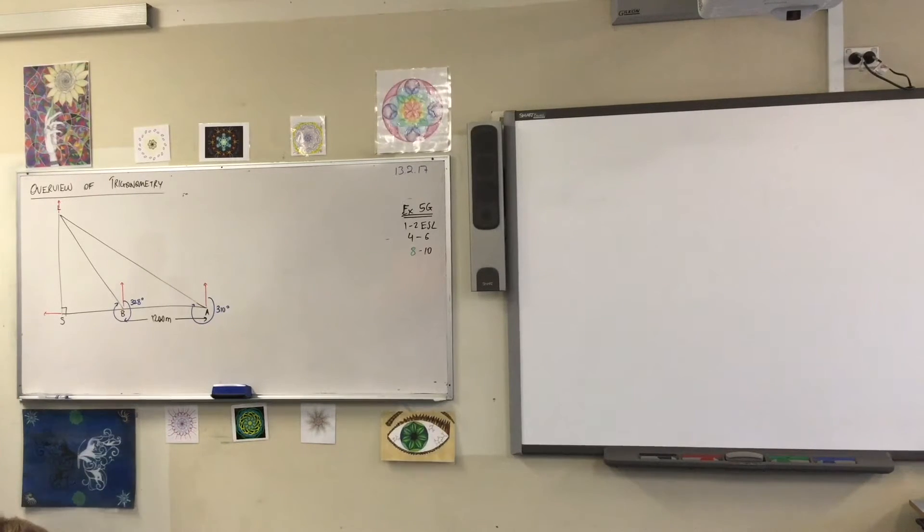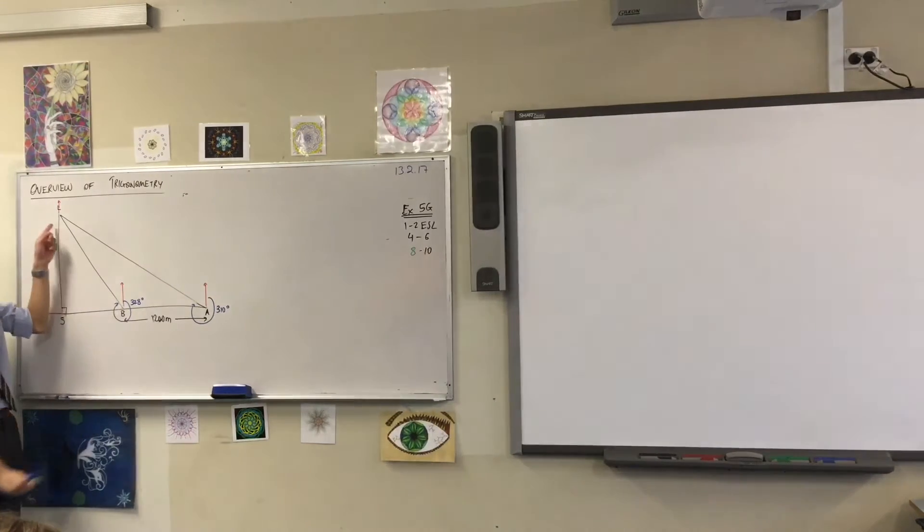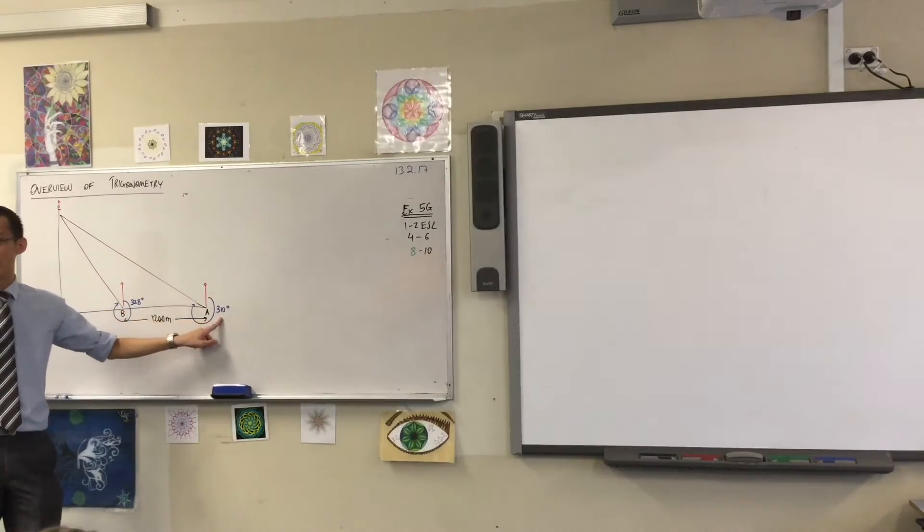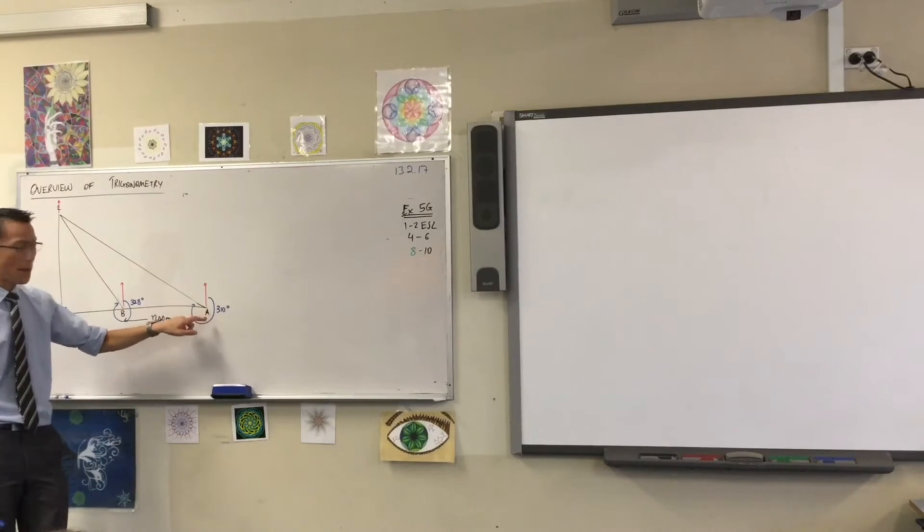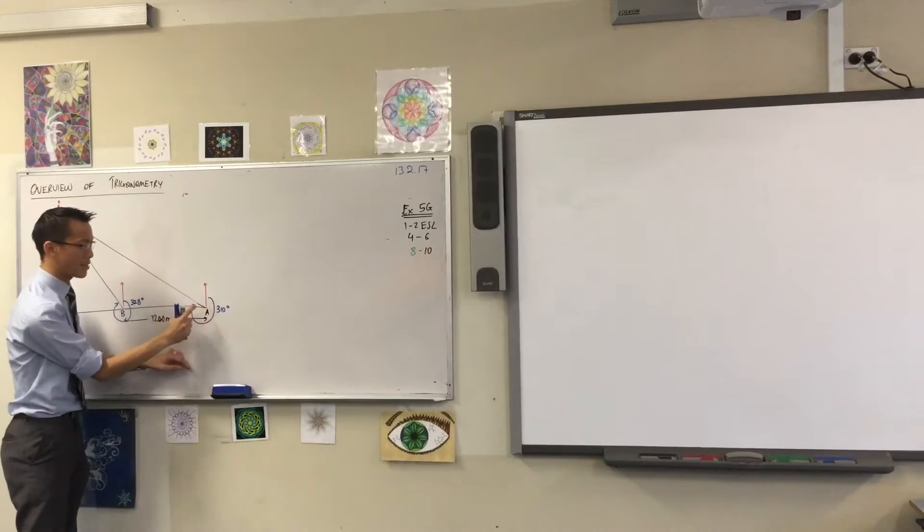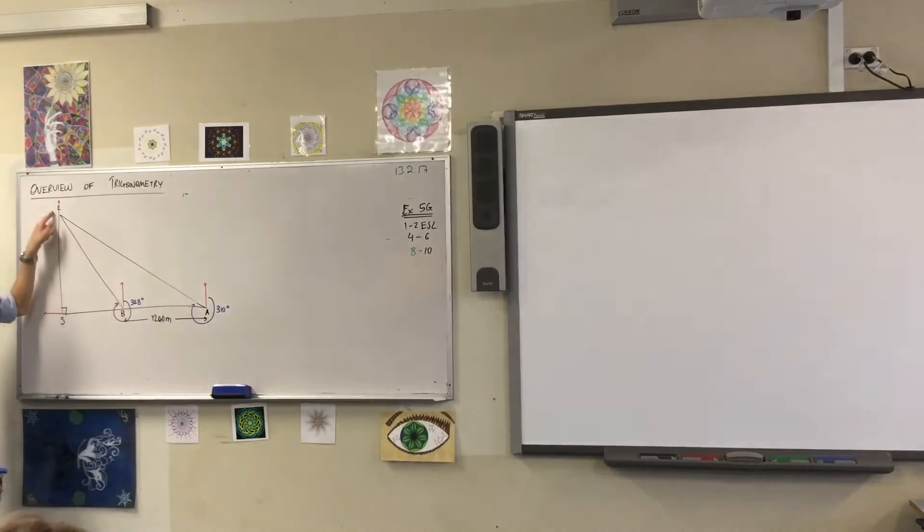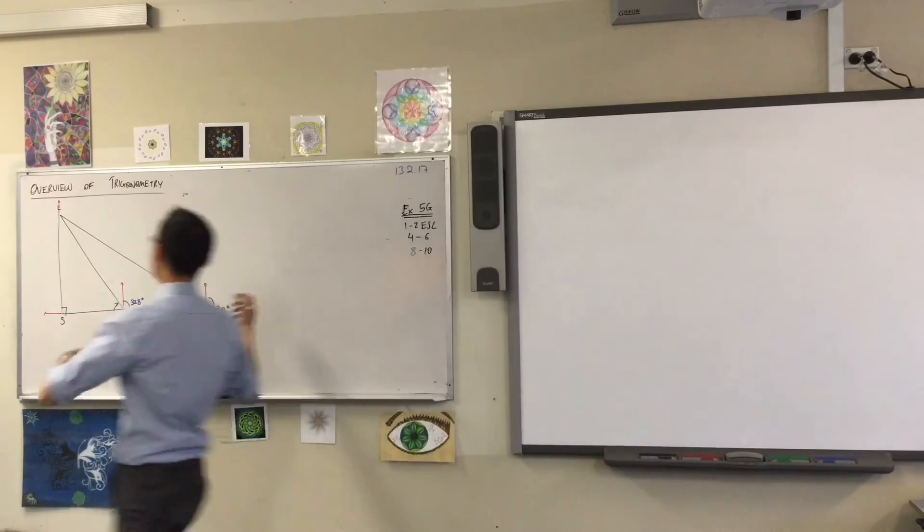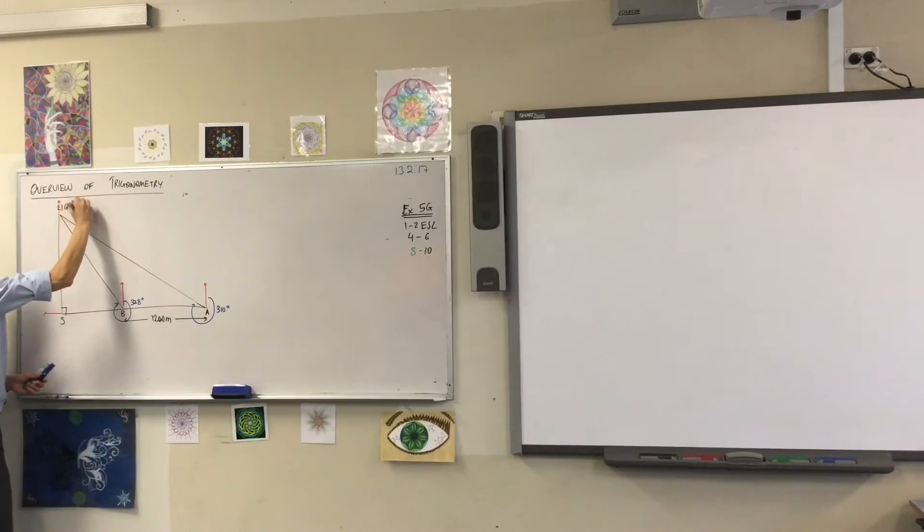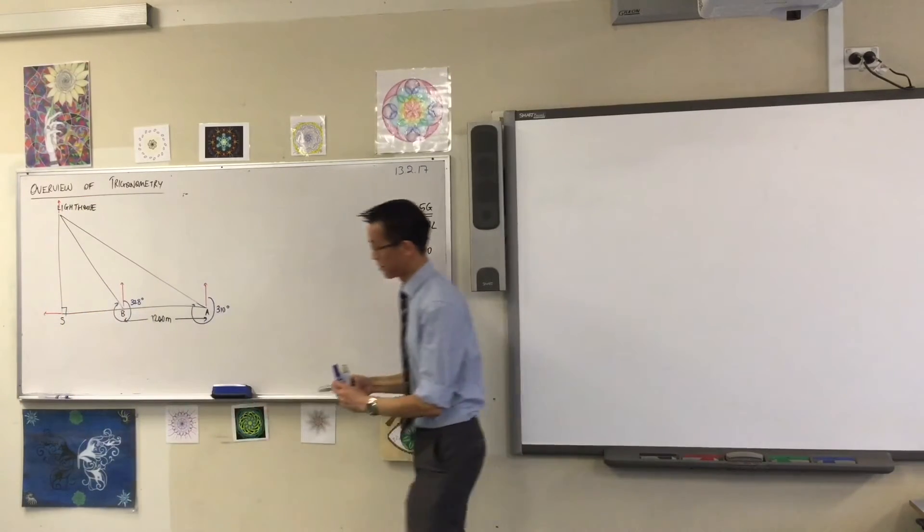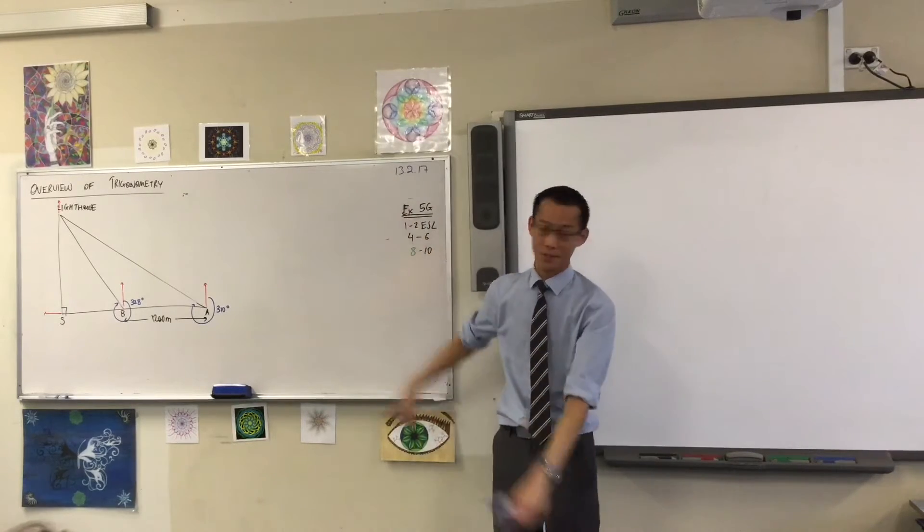The question says the bearing of a lighthouse from a boat is 310 degrees, and then they provide you these 310 degrees. That means if you're measuring from the boat, that's where your angle should be. That's where your compass belongs. So this must be where the boat starts, and that's why they call this L for lighthouse. So I'm going to label it. You'll see how valuable it is to have a diagram that's probably comically large so that I can see what's going on.